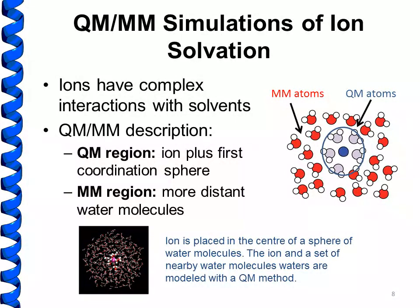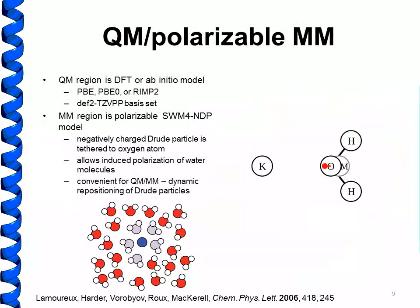One advantage of using CHARM Turbomole is a straightforward way of doing QM/MM simulations where the MM region is polarizable. In these examples we use a QM region modeled with DFT or ab initio methods — specifically the PBE DFT functional, the PBE0 hybrid DFT functional, or the resolution of identity implementation of MP2 — and in each case we use the triple zeta basis set DEF2-TZVPP. For the MM region we use the polarizable SWM4-NDP water model, which is the Drude polarizable model of water developed by Guillaume Lamoureux.